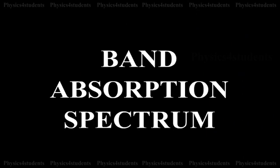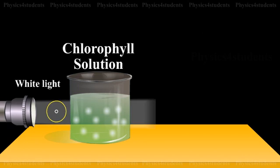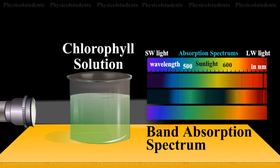Band Absorption Spectrum: If white light is allowed to pass through iodine vapor, dilute solution of blood or chlorophyll, or through certain solutions of organic and inorganic compounds, dark bands on a continuous bright background are obtained. Band absorption spectra are used for making dyes.